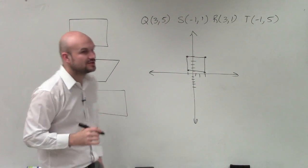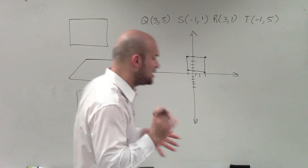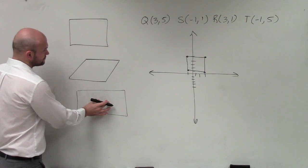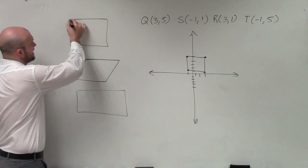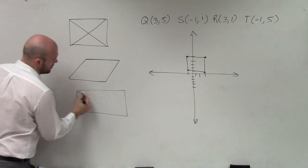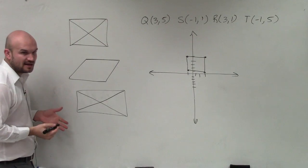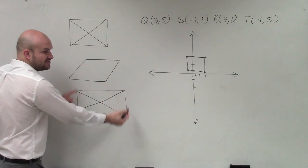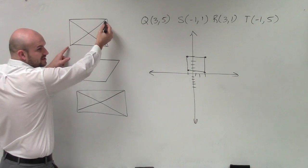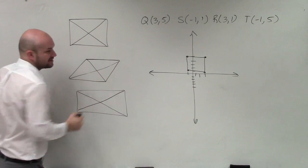All right, and the thing I want you guys to understand about a square and a rhombus—I'm sorry, a square and a rectangle—is that the diagonals are exactly equal in length. Do you guys see that? These two distances are exactly the same in length. These two distances are exactly the same length. However, this length is not the same as that length. Correct?